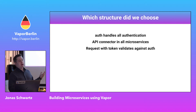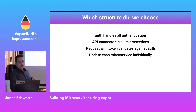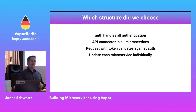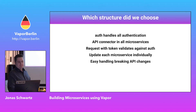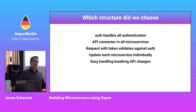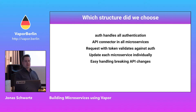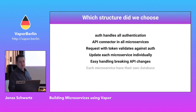Of course you need to have multiple copies of the same files this way, but it also makes it easy to update. Each microservice can be updated individually. If I had a single package with all my connections, I'd need to update them all together. It's easy to handle breaking API changes. If microservice A connects to microservice B, you only need to update that connection file if you break the endpoints.